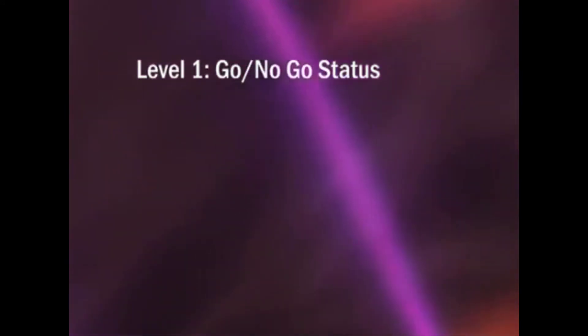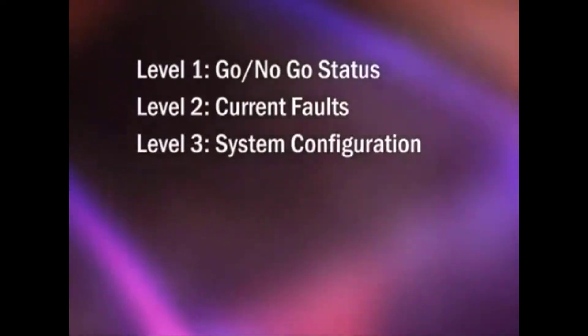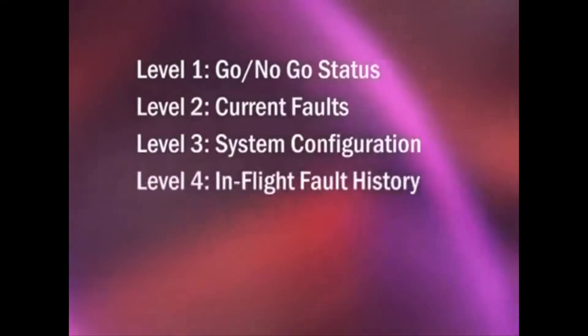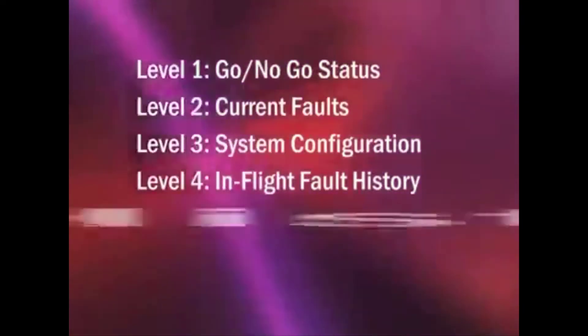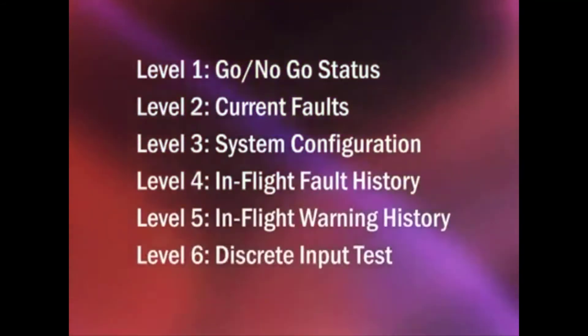The eGPWS has six levels of self-test. Level 1: Go, No-Go Status. Level 2: Current Faults. Level 3: System Configuration. Level 4: In-Flight Fault History. Level 5: In-Flight Warning History. Level 6: Discrete Input Test.